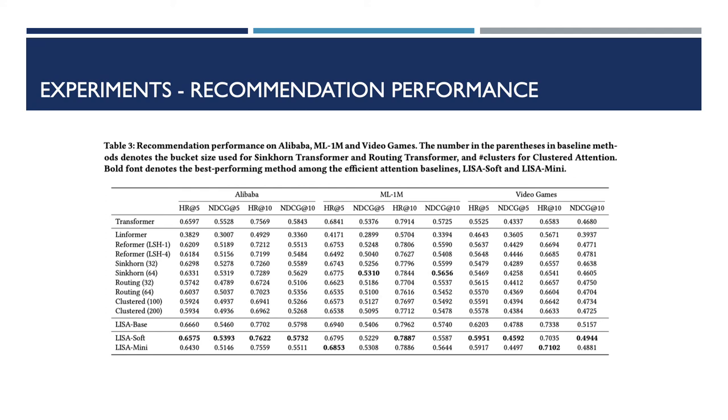We use real-world datasets for recommendation to analyze the recommendation performance of our proposed self-attention method compared with the vanilla transformer and some existing efficient attention baselines. As we can see, our method consistently outperforms all the existing efficient attention baselines in terms of recommendation performance. Here we know that the bottom two lines, LISA-soft and LISA-mini, are two variants of LISA. One of them allows soft code word assignment and the other uses a separate code book to encode sequences. These two variants allow us to use much smaller code books resulting in further efficiency improvements.